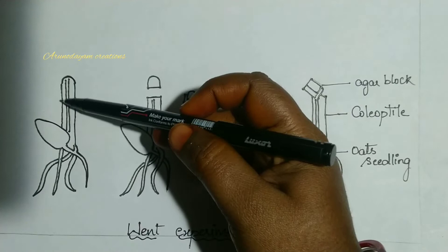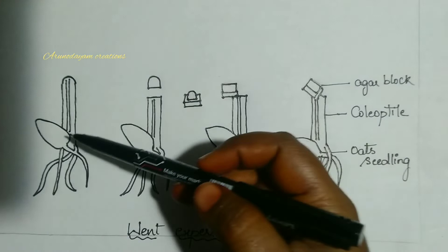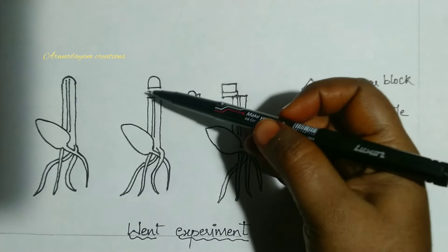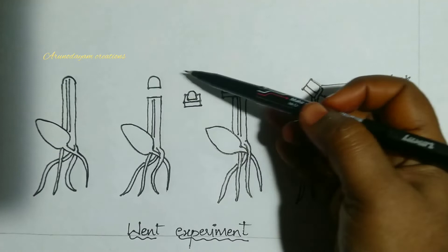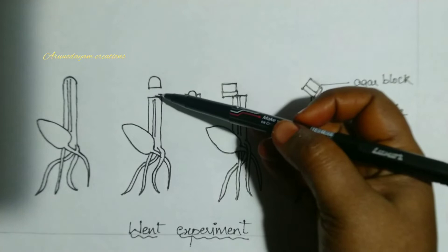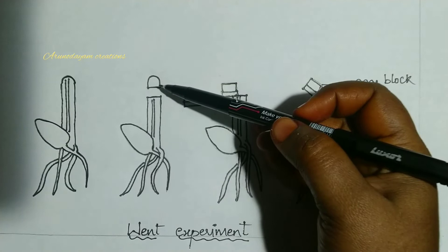F.W. Went took one oats seedling and decapitated it - he cut the tip portion. He removed the tip portion because we know from Charles Darwin's experiment that the influence is present in the tip portion. He put this tip on an agar block for one hour.